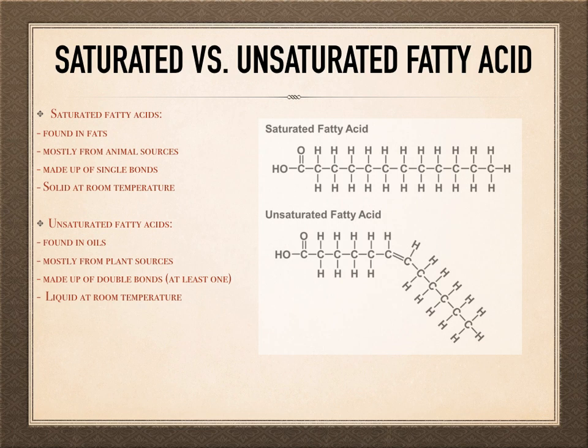Unsaturated fats, on the other hand, are the ones in which at least one double bond can be found. These are known as the healthy fats, and an example of where they can be found is in vegetable oil. They usually originate from plant sources. These types of fats are liquid at room temperature, and unsaturated fats can have one double bond, called monounsaturated, or multiple double bonds, called polyunsaturated.